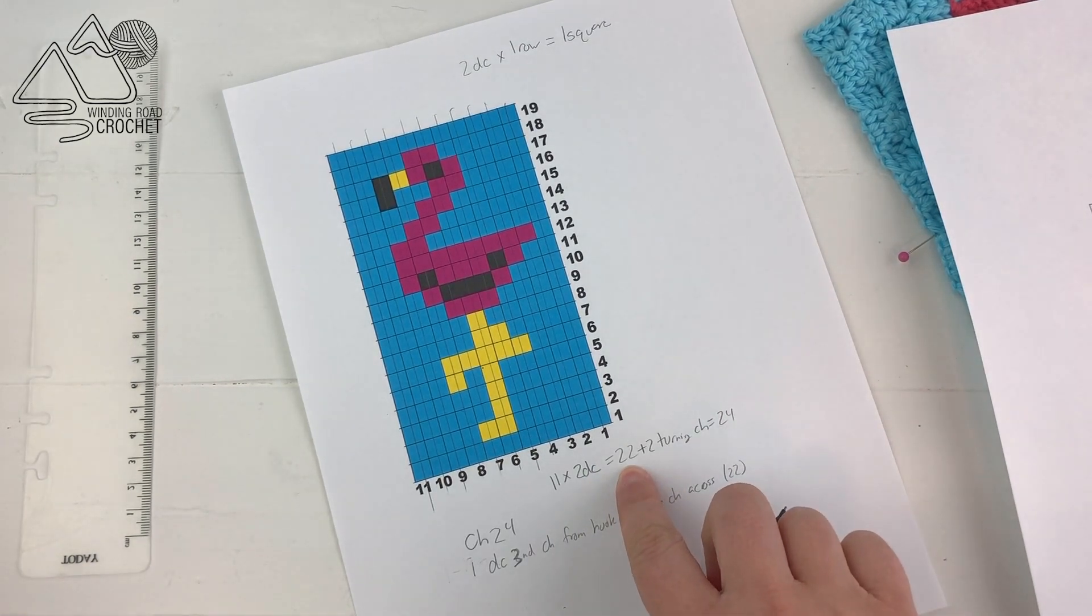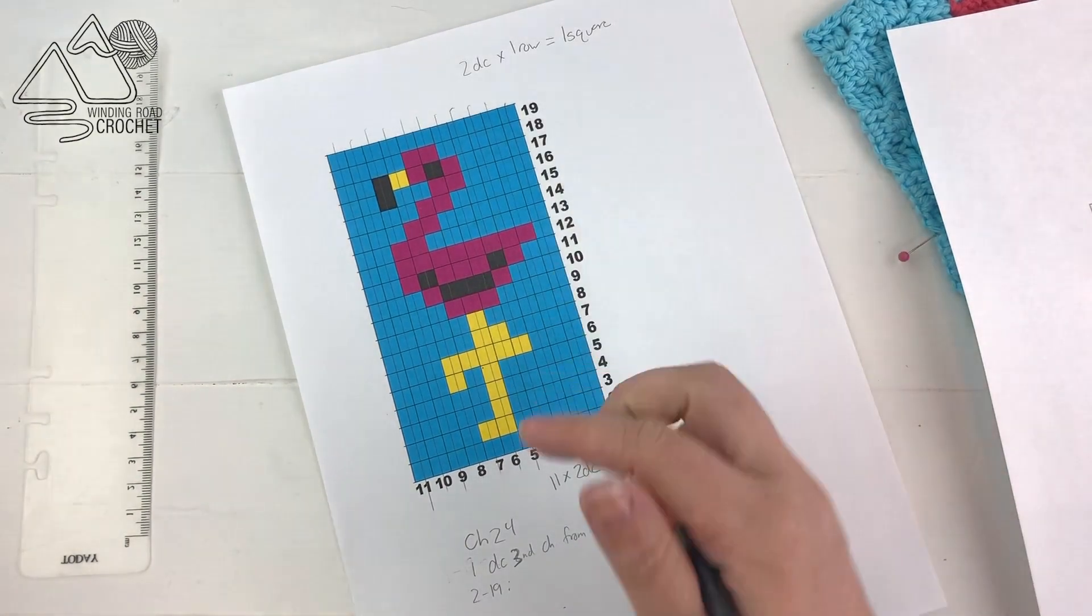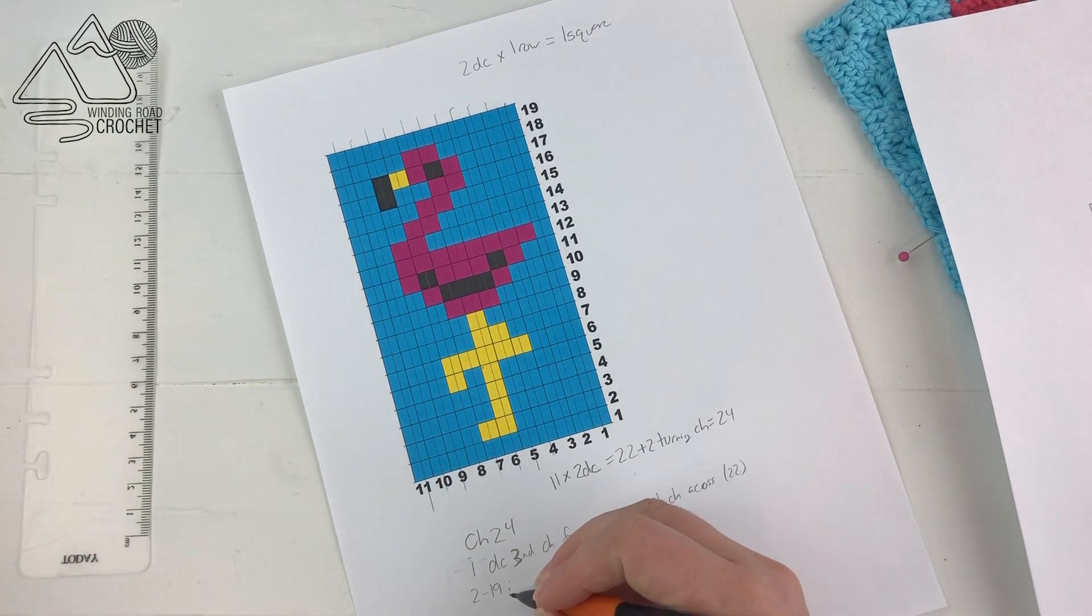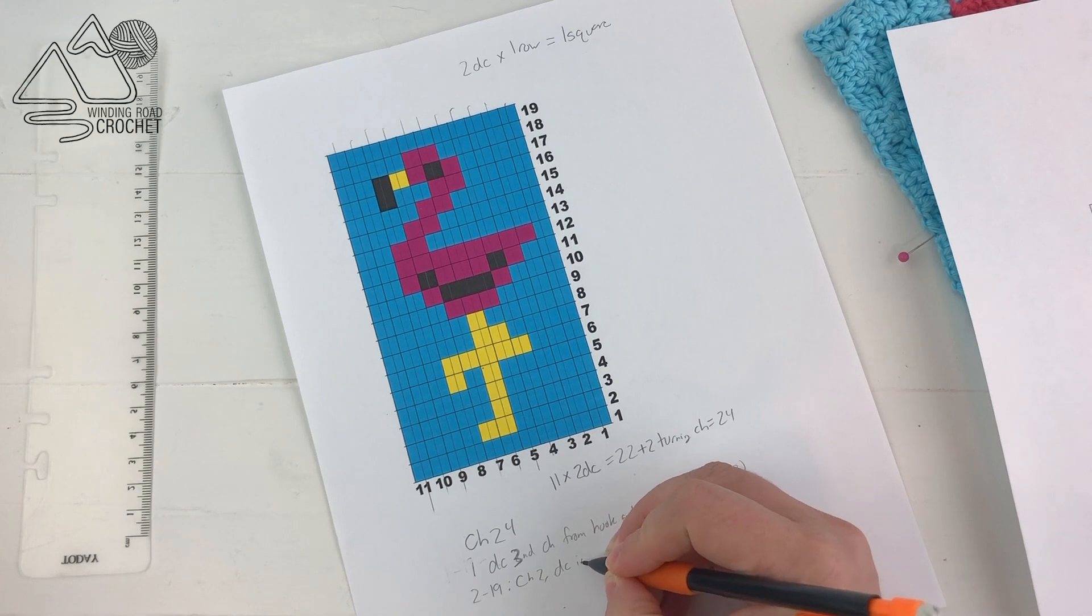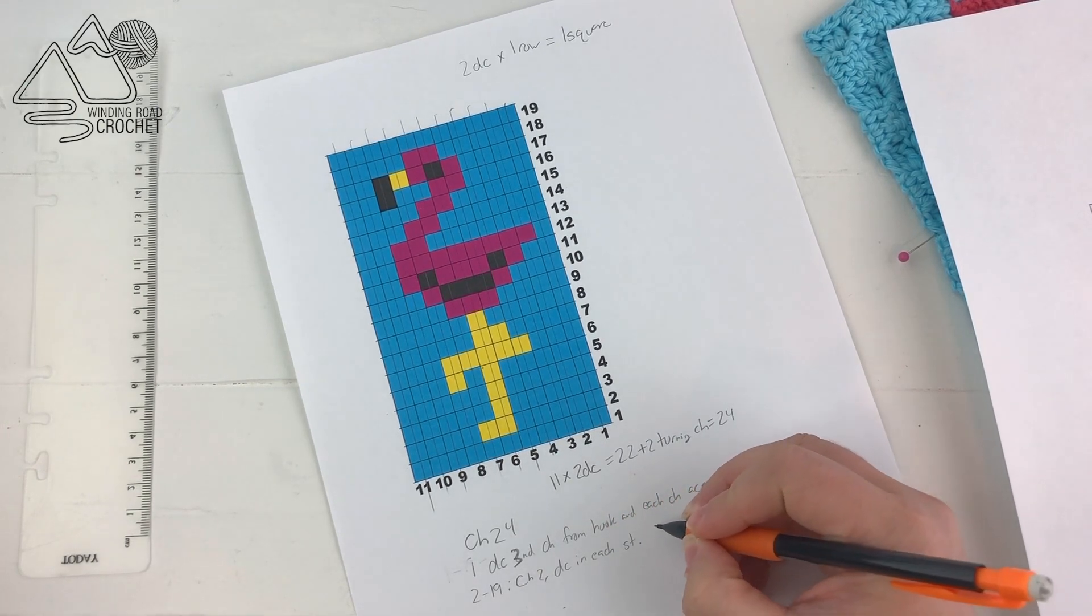Then the rest of our rows will be exactly the same. So row 2 through row 19, because I have 19 vertical rows, it's simply going to be chain 2, turn, and then double crochet in each stitch across, which will give me 22 double crochet.